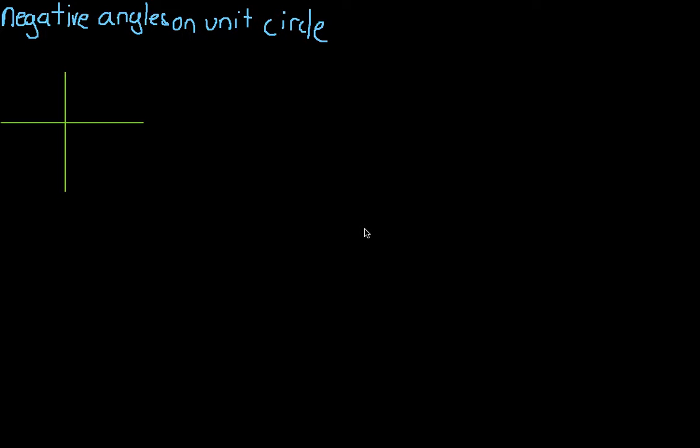This video is going to describe how you find the value of negative angles on the unit circle. So when you are on the unit circle, normally what you'd have here is you would have 0.